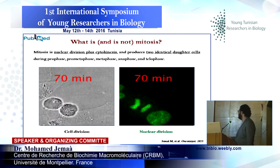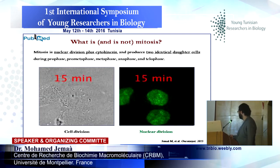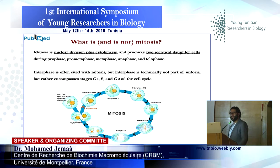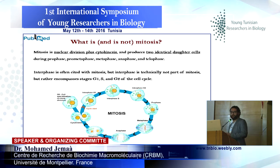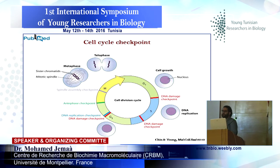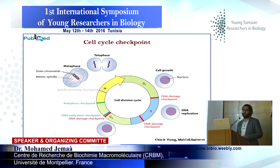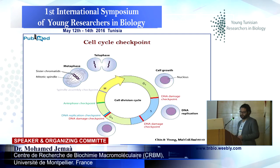Here you can see clearly the normal mitosis, normal cell division. Interphase is often associated with mitosis, but interphase is technically not part of mitosis, but rather encompasses stages G1, S — which is DNA replication — and G2. To perform a normal cell cycle, we need checkpoints, and several checkpoints exist to allow cells to perform a good division.